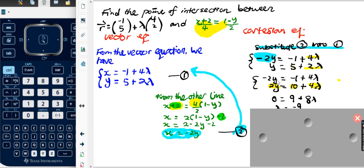If I add these two equations together, negative two y plus two y is zero. Negative one—oh sorry, here I did not cancel lambda, I cancel y instead. So negative one plus ten is nine. Four lambda plus four lambda is eight lambda. Therefore, lambda is negative nine over eight.